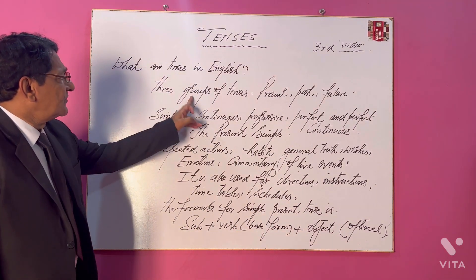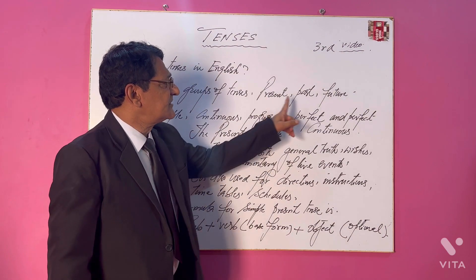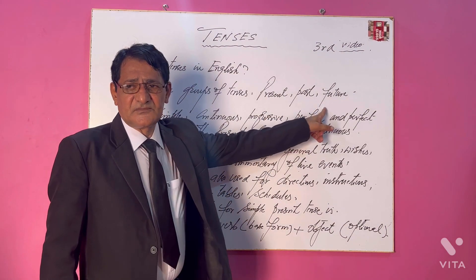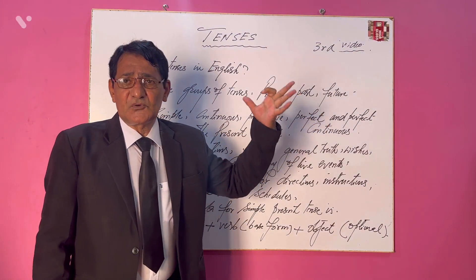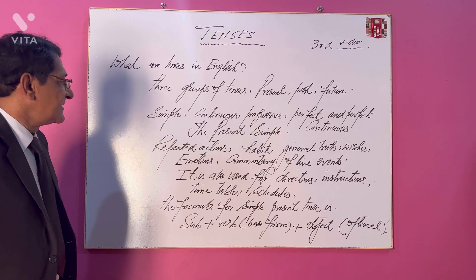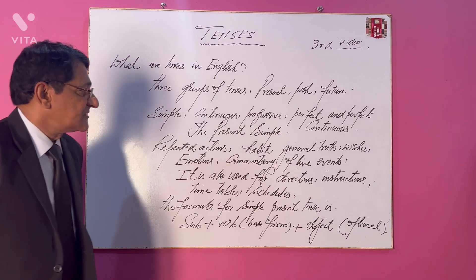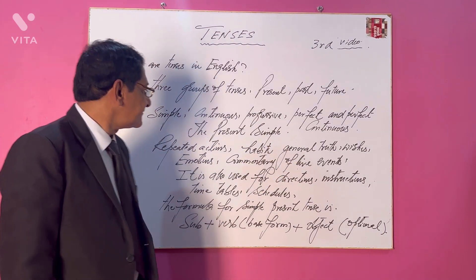Actually, three main groups of tenses are present: past and future. They are further broken into branches. They are simple, continuous, progressive, perfect, and perfect continuous.